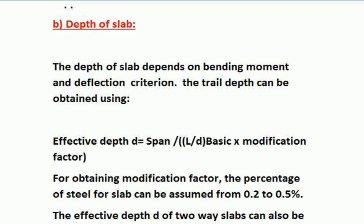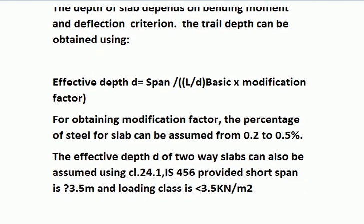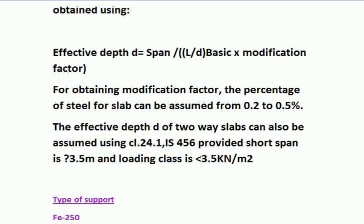The trial depth can be obtained using the following: effective depth small d equals span divided by (L/d basic) multiplied by modification factor. For obtaining the modification factor, the percentage of steel for slab can be assumed from 0.2% to 0.5%, and this value is used when multiplying with the L/d ratio.